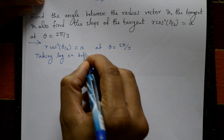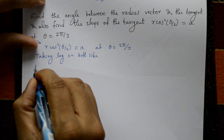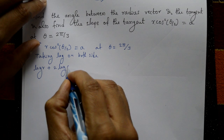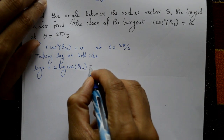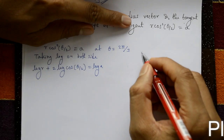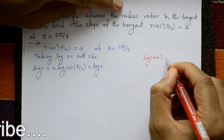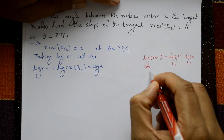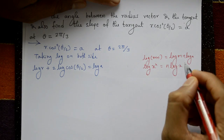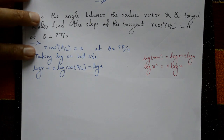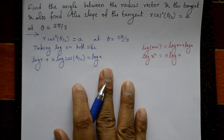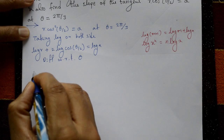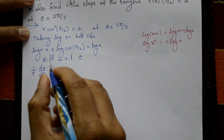Taking log on both sides: log r + 2·log(cos(θ/2)) = log a. Using log properties: log(mn) = log m + log n, and log(x^n) = n·log x. Now differentiate with respect to θ. The first term gives (1/r)·(dr/dθ), plus 2 times differentiate log cos(θ/2).